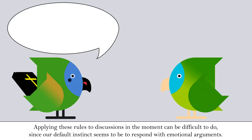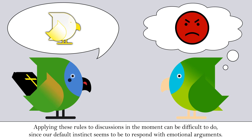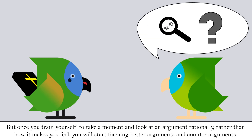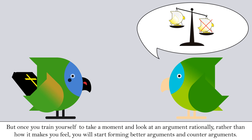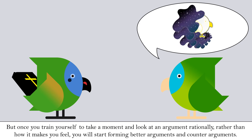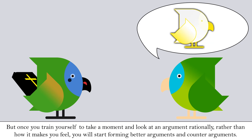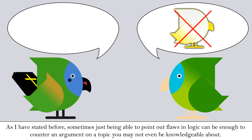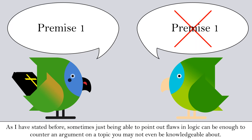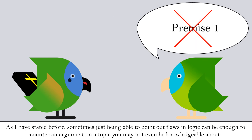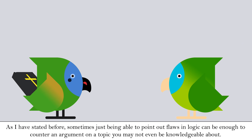Applying these rules to discussions in the moment can be difficult to do, since our default instinct seems to be to respond with emotional arguments. But once you train yourself to take a moment and look at an argument rationally rather than how it makes you feel, you'll start forming better arguments and counterarguments. Sometimes just being able to point out flaws in logic can be enough to counter an argument on a topic you may not even be knowledgeable about.